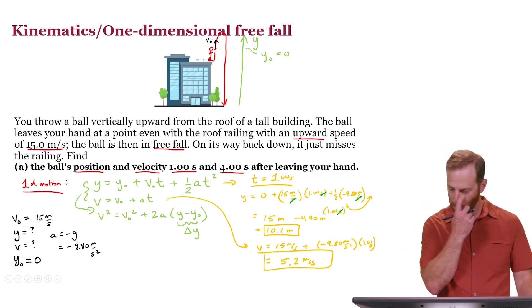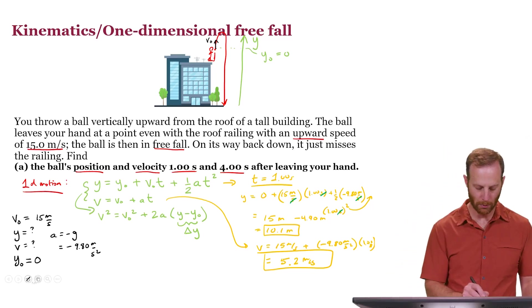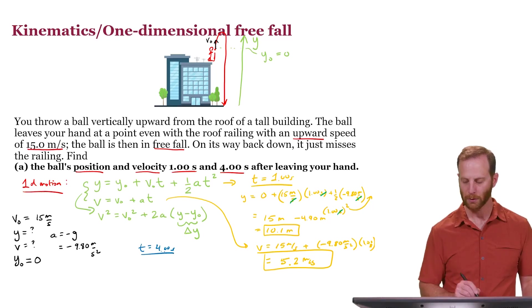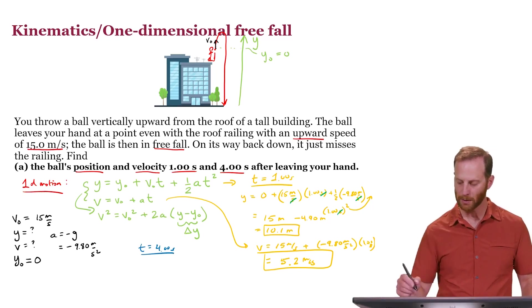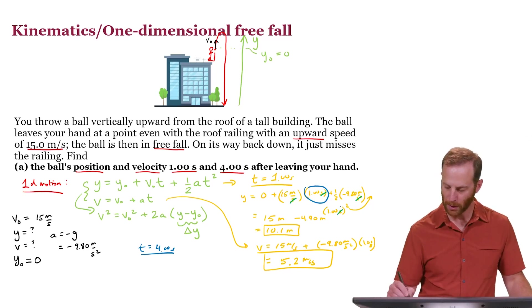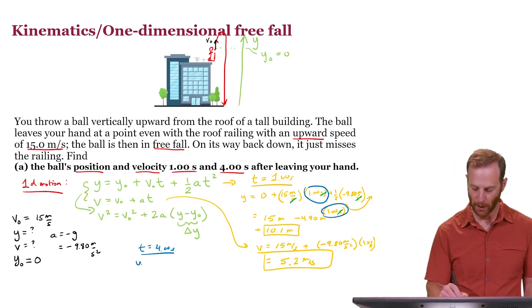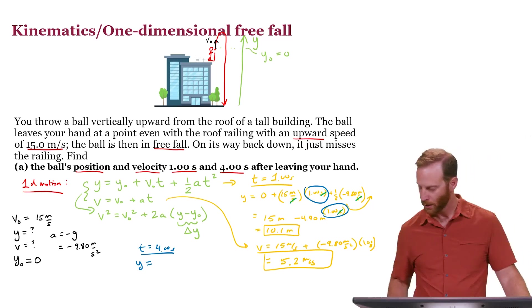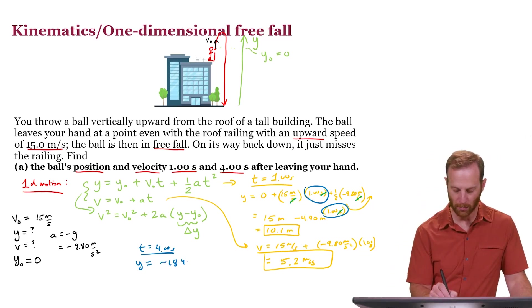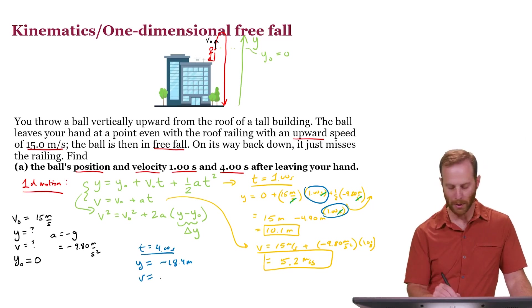Follow the same procedure, and do that for t is equal to 4 seconds. Same idea except in this location and in this location you'll put in 4 seconds instead, and you'll find that the y position comes out to be minus 18.4 meters and the velocity comes out to be minus 24.2 meters per second.